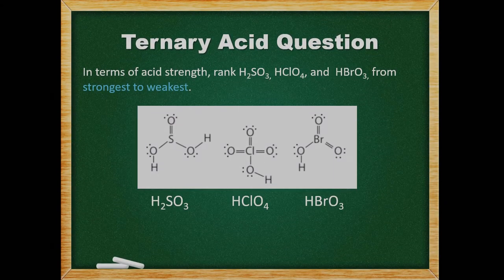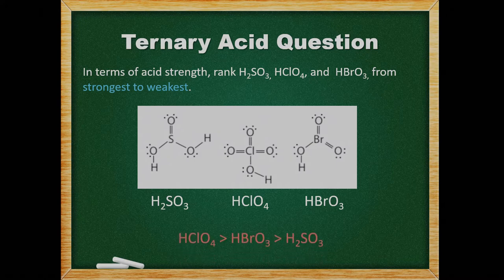In this example, we need to rank sulfurous acid, perchloric acid, and bromic acid from strongest to weakest. More oxygen atoms leads to a stronger acid, so perchloric acid must be the strongest. Since the electronegativity of bromine is higher than that of sulfur, its bonds are more polarizable, and bromic acid is the stronger acid.